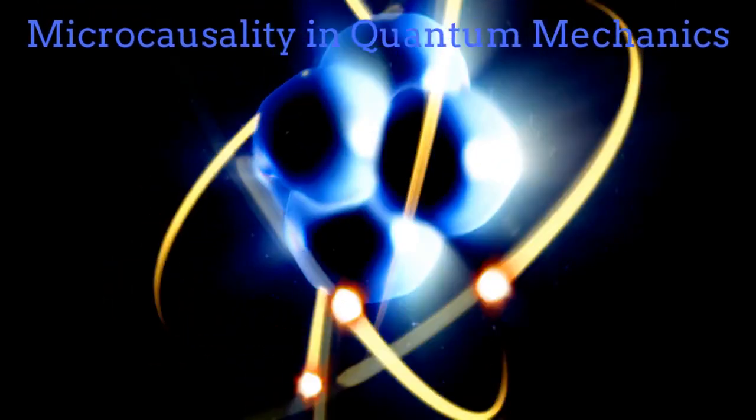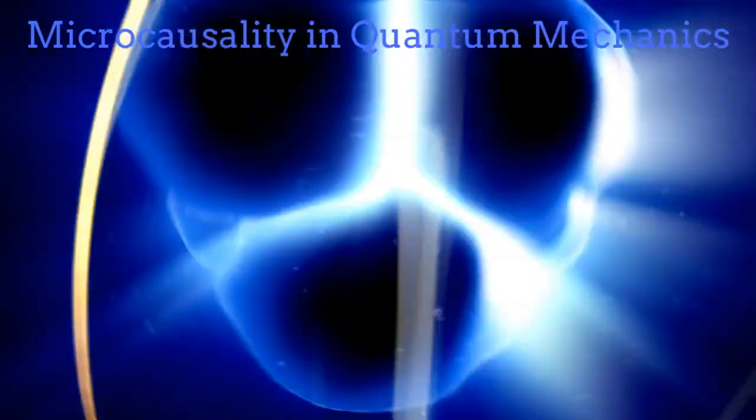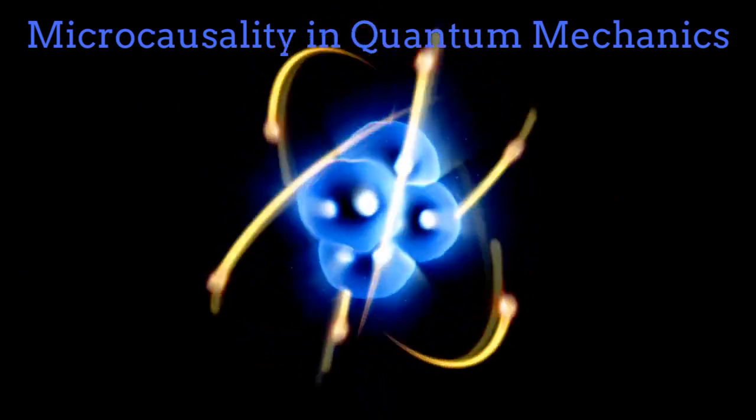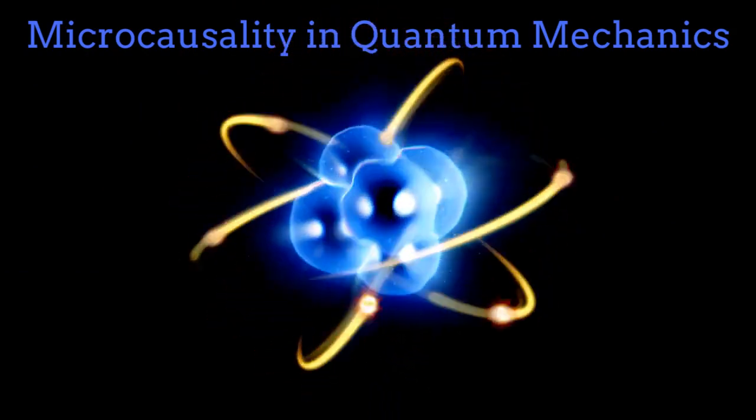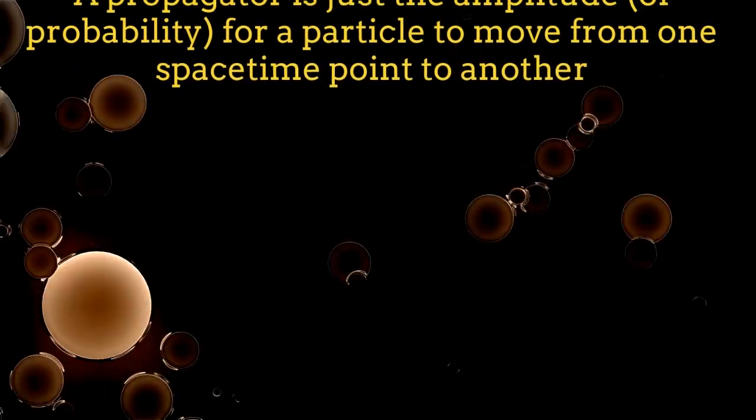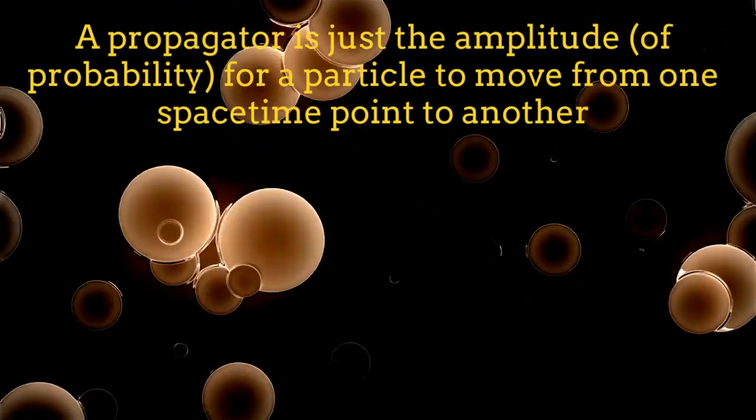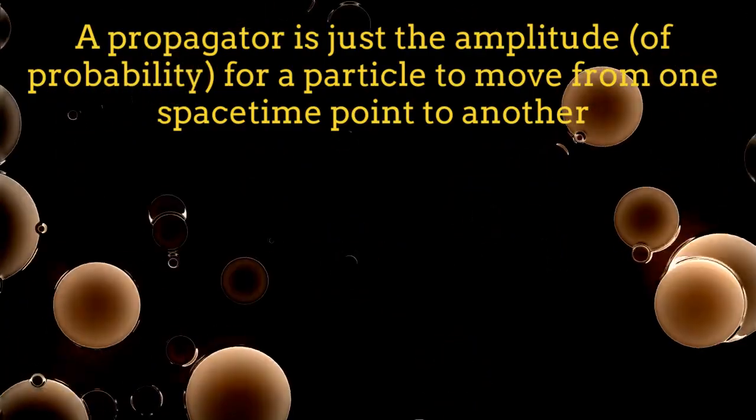But what happens at the quantum level? The causality concept in the quantum limit is called microcausality, and it is concerned with the behavior of propagators. A propagator is just the amplitude of probability for a particle to move from one space-time point to another.